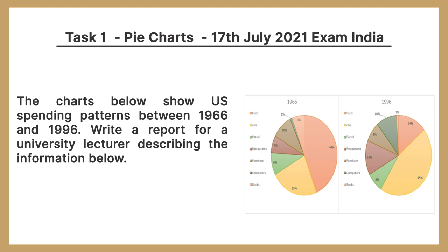Today I will discuss the 17th July 2021 writing task 1, which is a pie chart. The statement is: the charts below show US spending patterns between 1966 and 1996. Write a report for a university lecturer describing the information below.